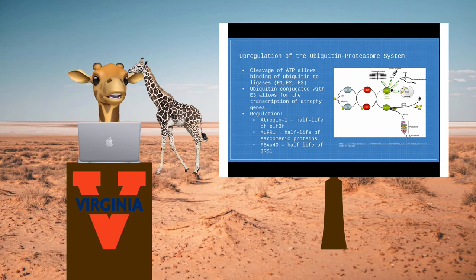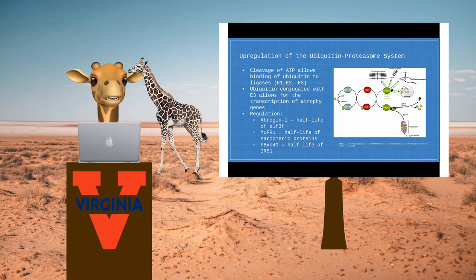When three ubiquitin molecules are conjugated to a ubiquitin ligase called E3, it can then bind to the proteasome to cause protein degradation. The library of E3 enzymes is quite extensive and not fully established yet. However, it has been established that atrogen 1, MUFR1, and FBXO40 are specific E3 proteins